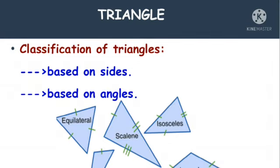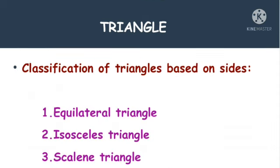Now, let's see the classification of triangles. Triangles can be classified according to properties of their sides and angles. Based on sides, triangles are of three types.